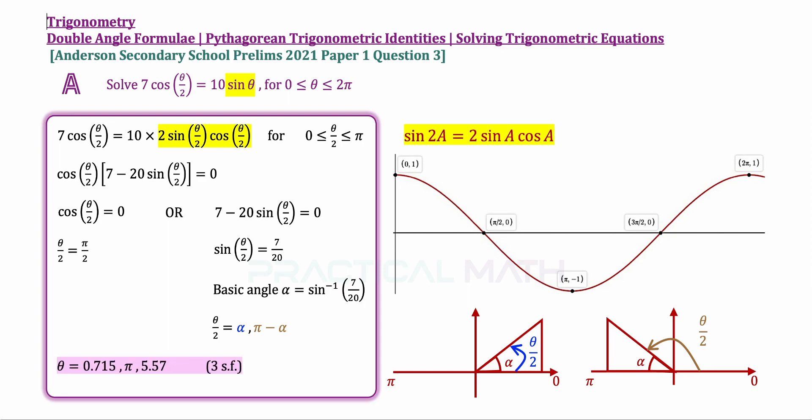Solving for theta for this whole thing will give us the answer 0.715, π, and 5.57 after we multiply 2 to all of these solutions. And that's the answer for part A of this question.